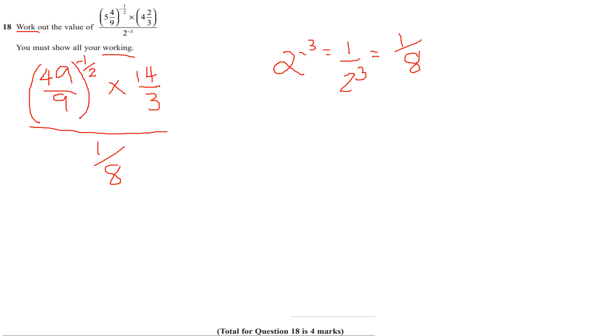So working out this bit here, the negative does the reciprocal, so I have 9 over 49ths to the power of a half. So what this means is that will be the square root of 9 over 49ths. The square root of the top, square root of the bottom, I'm going to get 3 sevenths.